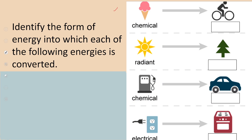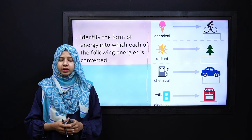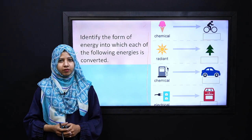Yahan par aapko kuch energy ki forms di gayi hain. To quickly aap in forms ko, in energies ko dobara dekhen aur bataiye aur identify kariye ke which of the following energies kin dousari energies mein convert hongi. Aur given spaces ko fill kariye. To activity ko pause karke apni video ko pause kariye aur is activity ko solve kariye.